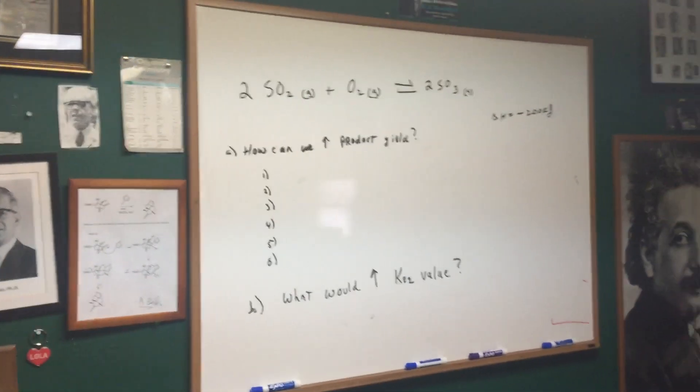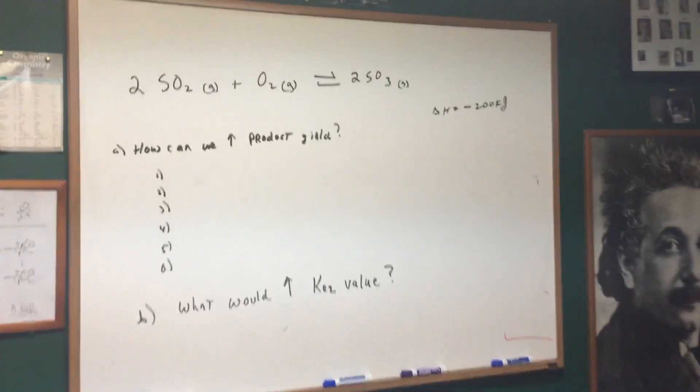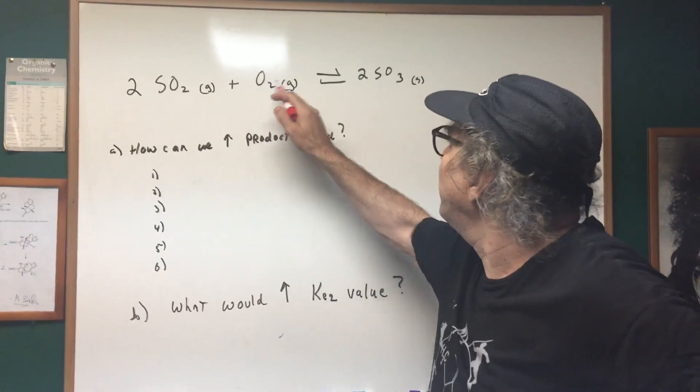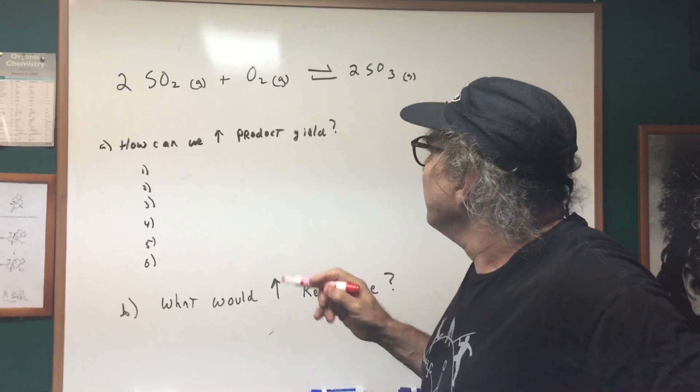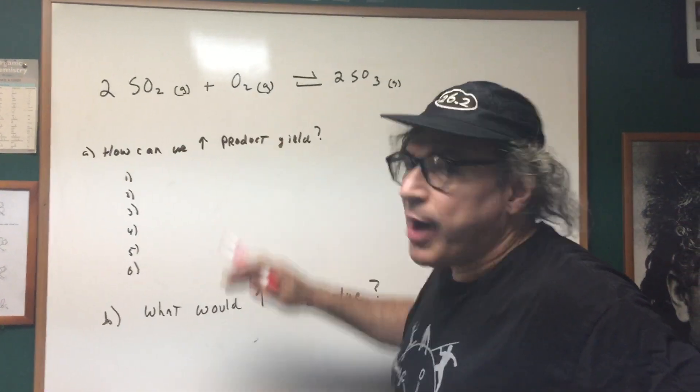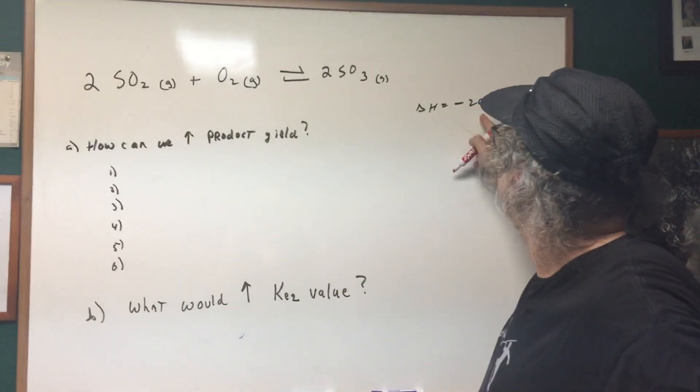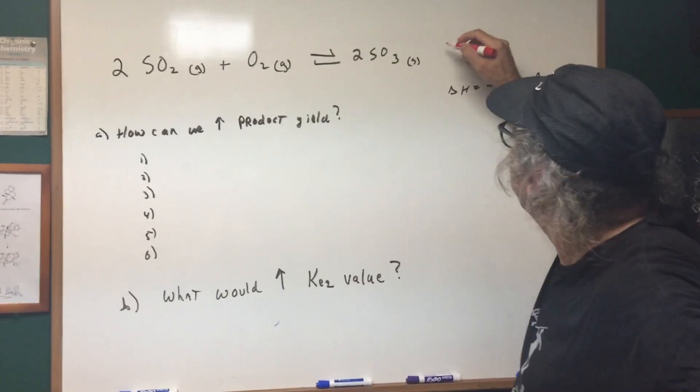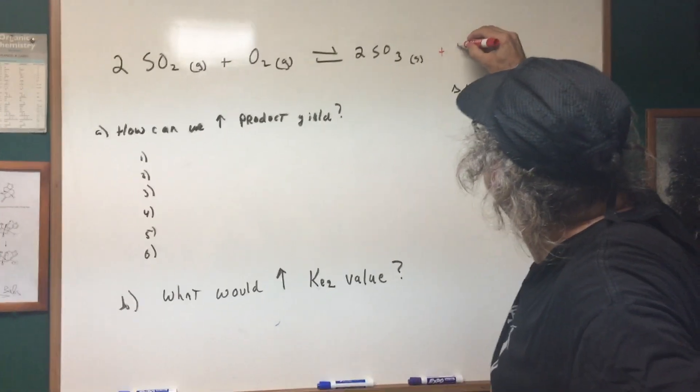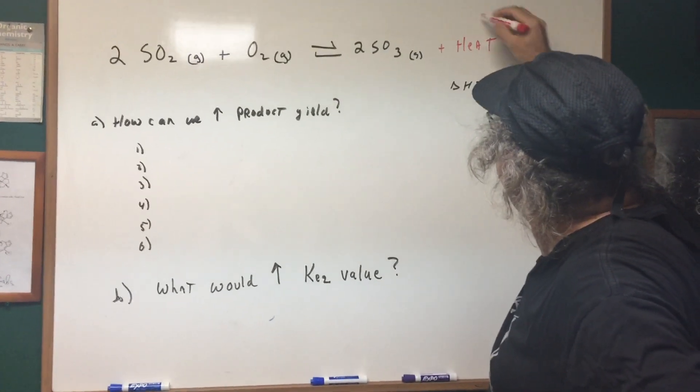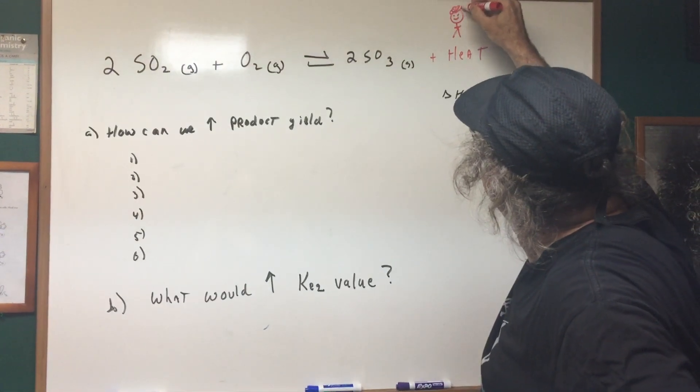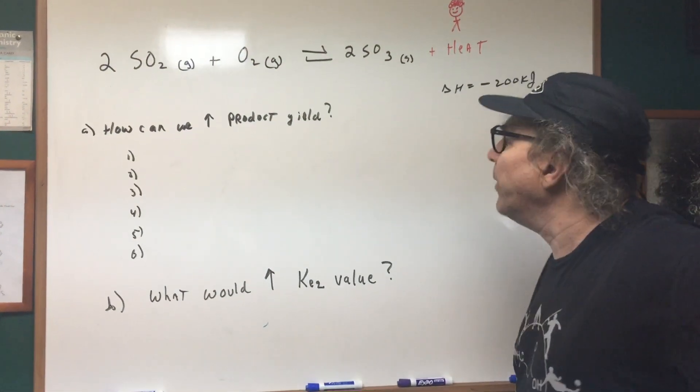All right, let's do one more that I have for you. What I have here is 2SO2 plus O2 gives 2SO3. And what I want to do is how can we increase the product yield? So once again we look at the delta H. This time it's negative which means it's exothermic. So what does that mean? That means heat is given off. I write heat and once again I draw my little Homer friend. I never do a problem without little Homer.